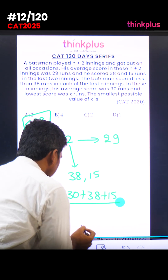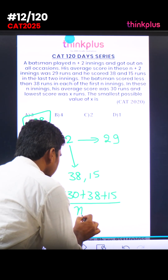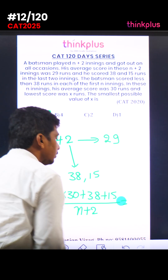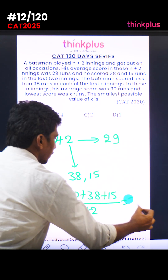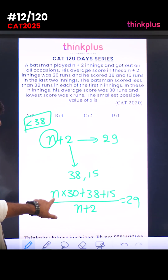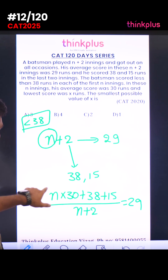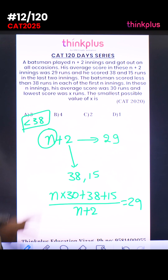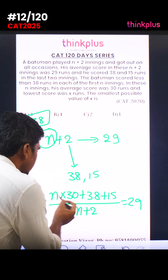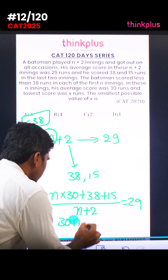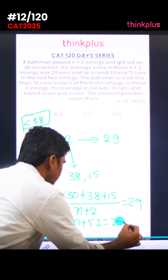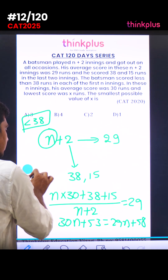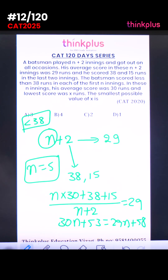The total innings are n plus 2, and the total average is 29. We have the clue that the value of n is constrained because in the n innings each score is less than 38, maximum 38. So: 30n plus 53 equals 29(n plus 2), which gives 30n plus 53 equals 29n plus 58, so n equals 5. That means there are 5 innings.